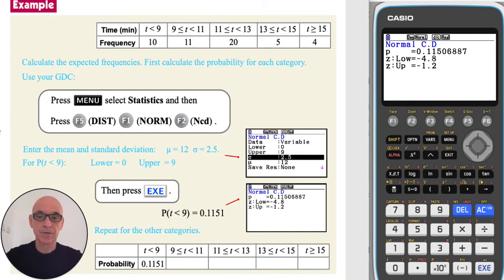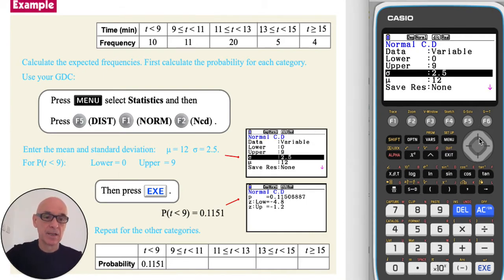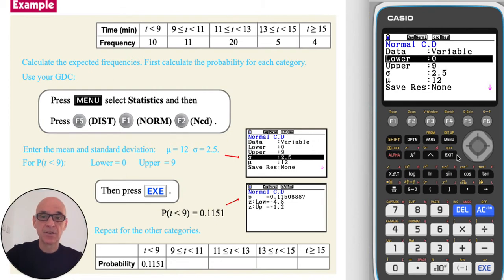Repeat this process for the other categories. Press and exit. Then for the next category, setting a lower of nine minutes and an upper limit of 11 minutes, and press and execute to calculate.